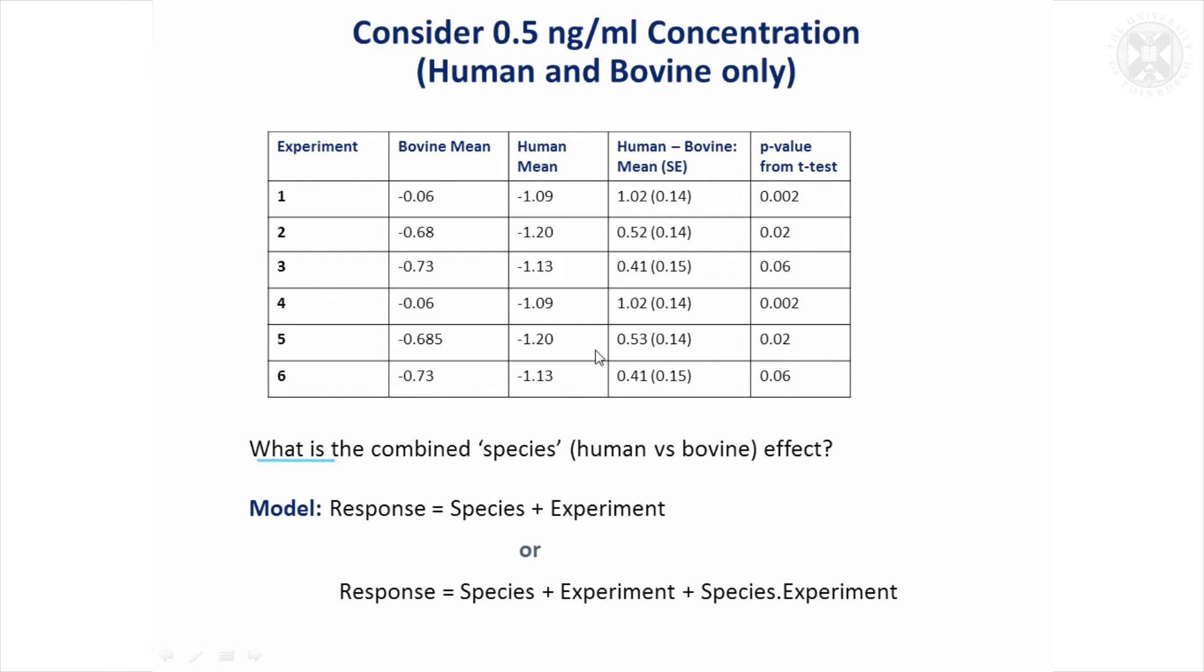But what our question might be is what's the combined species effect, human versus bovine. This is what the main objective of the experiments was—to find out if there was a difference in some way between the human and the bovine results. So we could think about a model: fit a species effect and the experiment effect, or we might want to think about a species and experiment interaction as well, because perhaps this species effect varies between the experiments. I mean, you'd expect that by chance to some extent, but maybe it's varying a bit more than by chance. So how might we analyze that to get a combined result?